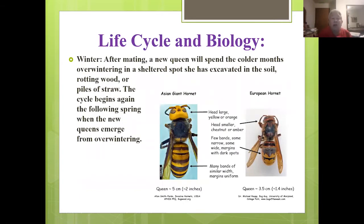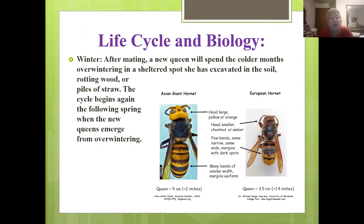In wintertime, after mating, a new queen spends the colder months overwintering in a sheltered spot she's excavated in the soil, under rotting wood, or in straw. The cycle begins again the following spring when the new queens emerge. The Asian giant hornet is quite a bit bigger than the European hornet — it has more bands, and is more like our cicada killer compared to the European hornet.